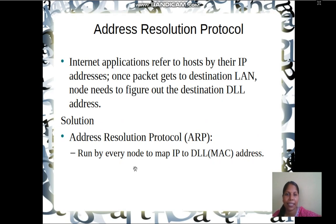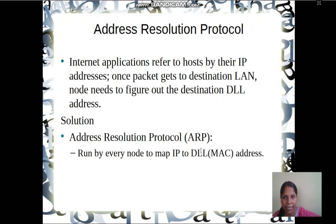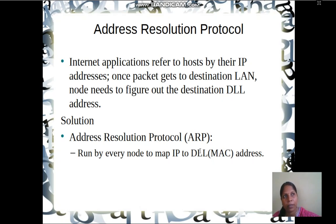Next is Address Resolution Protocol (ARP). Simply speaking, ARP is the process of mapping an IP address to a hardware address. When a packet comes from higher layers to the network layer, it is identified by the IP address. But at the data link layer — specifically Ethernet — every machine is identified by a hardware address, which is unique globally and is 48 bits long, consisting of alphanumeric characters.